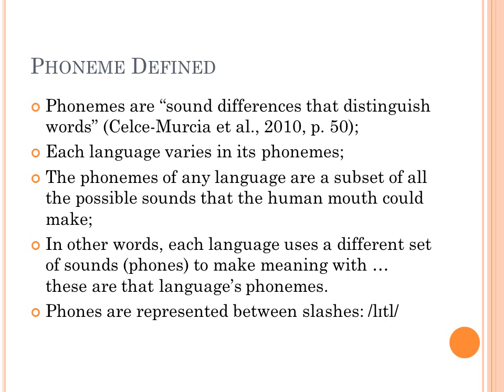Phonemes are sound differences that distinguish words. Each language varies in its phonemes. The phonemes of any language are a subset of all the possible sounds that a human mouth could make. Each language uses a different set of sounds — phones — to make meaning with, and these are the language's phonemes. Phonemes are represented between slashes. When you see something written between slashes, what is being said is that these are the meaningful sounds produced. Slight differences in sound that don't change the meaning are not being taken into account.